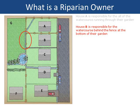So unless the title deeds show otherwise, or the land is clearly owned by someone else, it is presumed that each party owns to the middle of the watercourse.